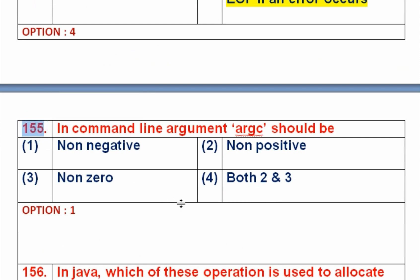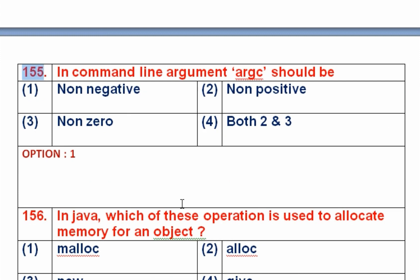Question number 155: In a command-line argument, argc should be — option 1 is non-negative, option 2 is non-positive, option 3 is non-zero, option 4 is both two and three. Command-line arguments are parameters passed to the main function from the command line. argc contains the number of parameters including the executable name, so there is always at least one. Therefore argc is always a non-negative value. Option 1, non-negative, is the right answer.